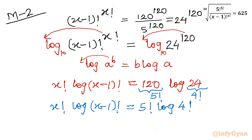In the next step, we write 4 as 5 minus 1. Comparing both sides, we conclude in the same way that x is equal to 5.